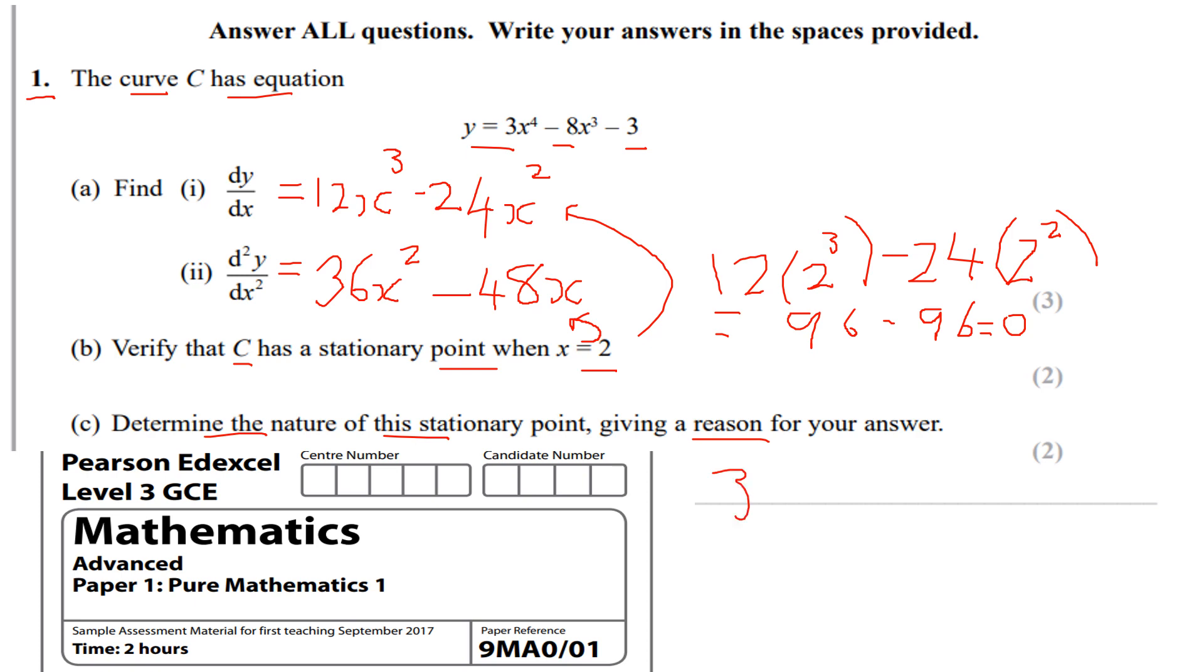Now, 36 lots of 2 squared subtract 48 lots of 2. 48 times 2 is going to be 96, so we're going to be subtracting 96. 2 squared is going to be 4, 4 times 36, double 36 is going to be 72, double that would be 144. 144 minus 96, that's going to be greater than 0. Therefore we have a local minimum.